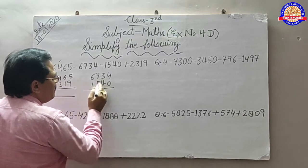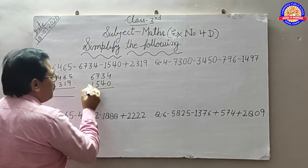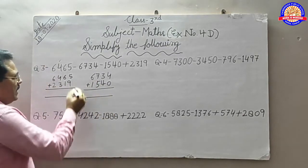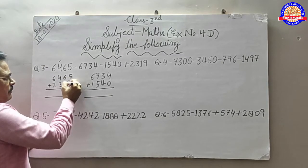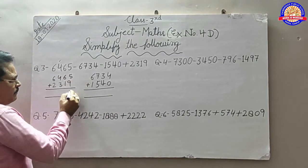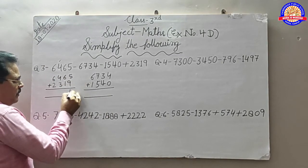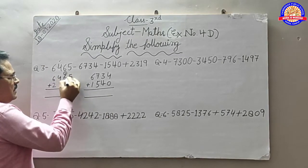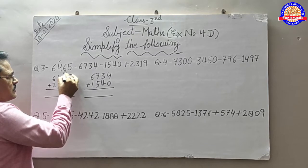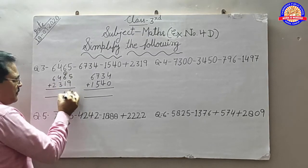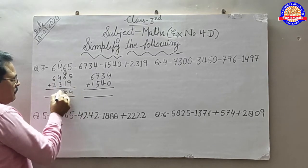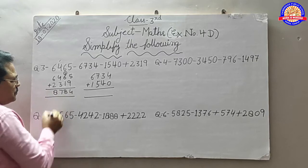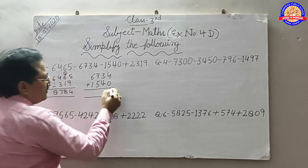Now we will add this to this. 9 plus 5 equals 14, carry 1. 6, 7, 1 makes 8. 4, 3, 7. 6, 2, 8.